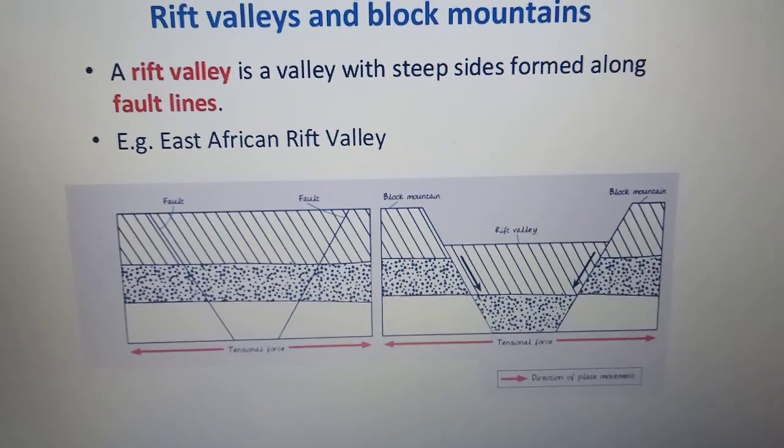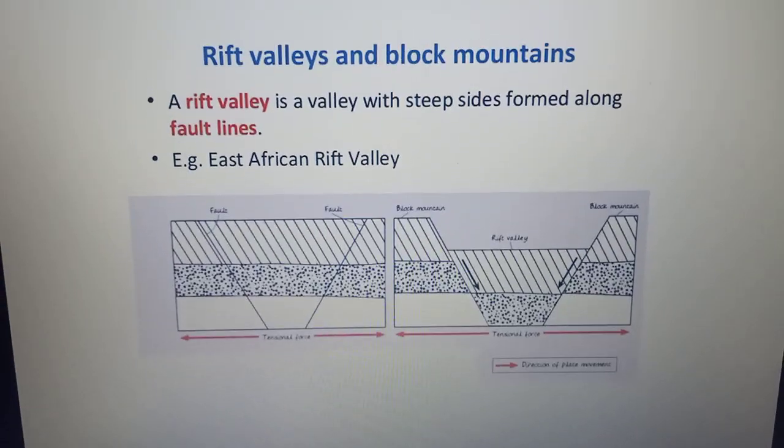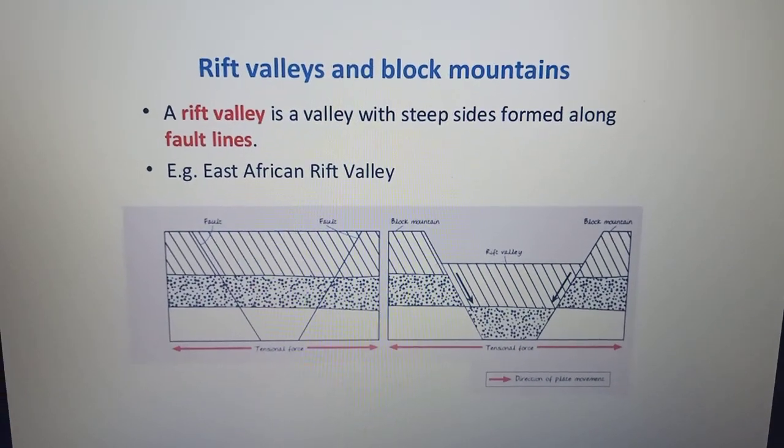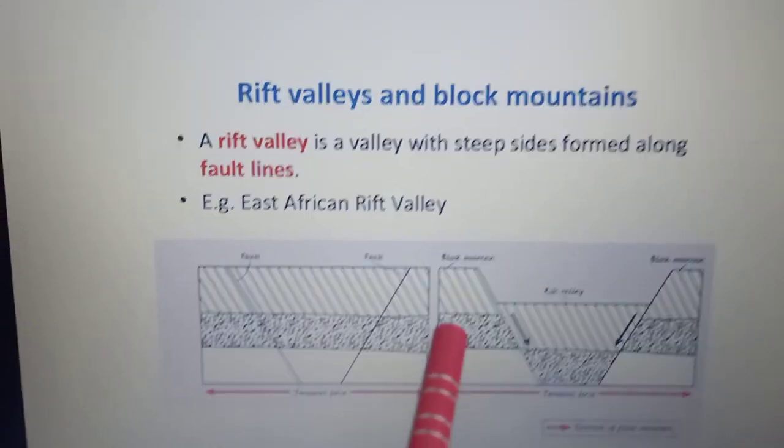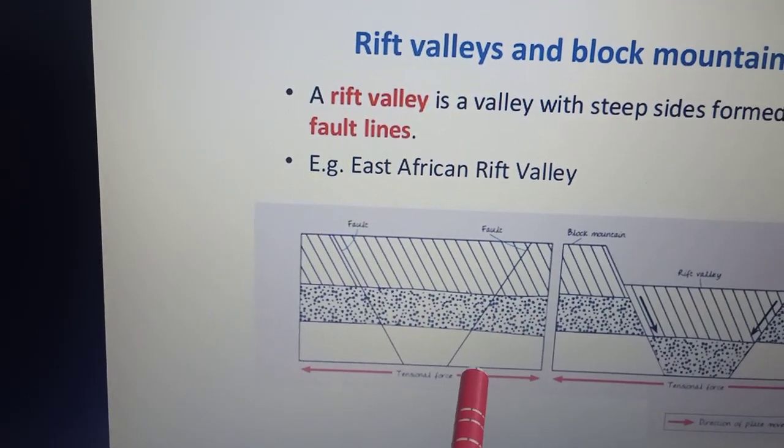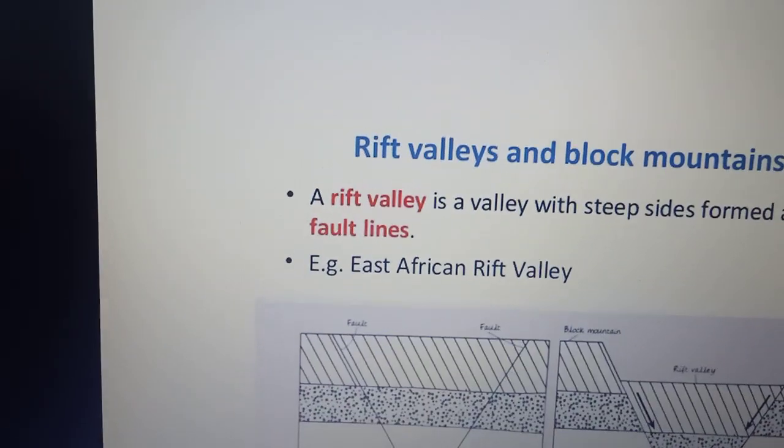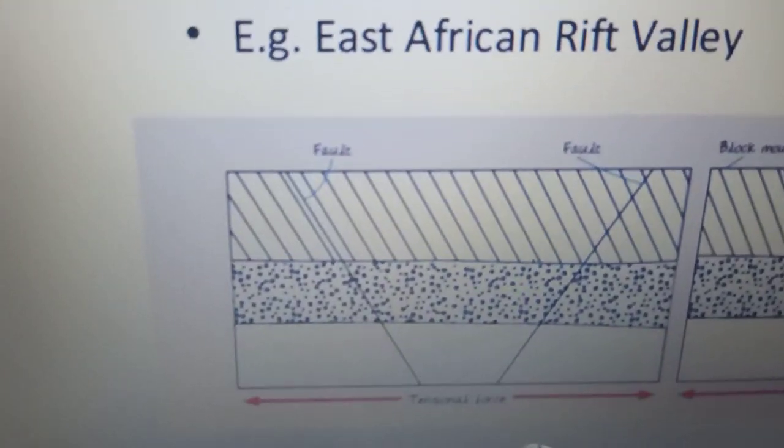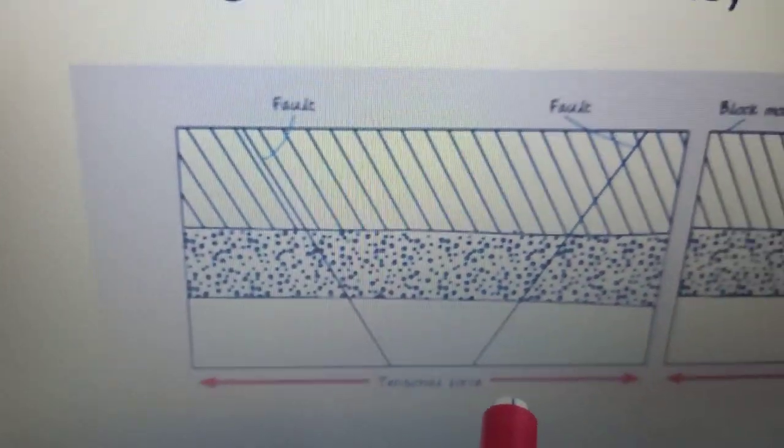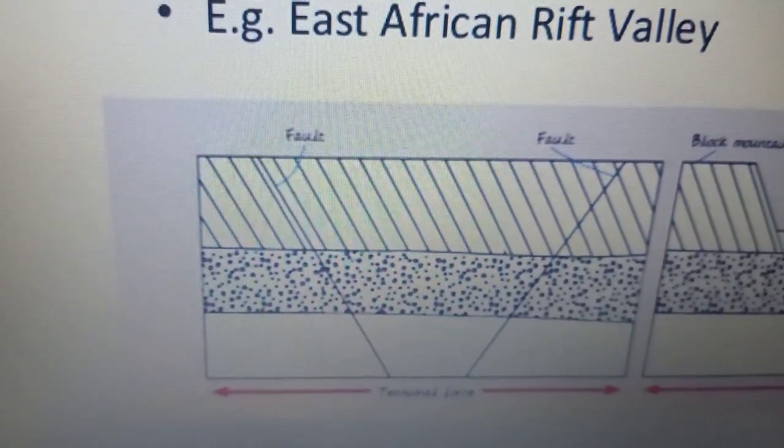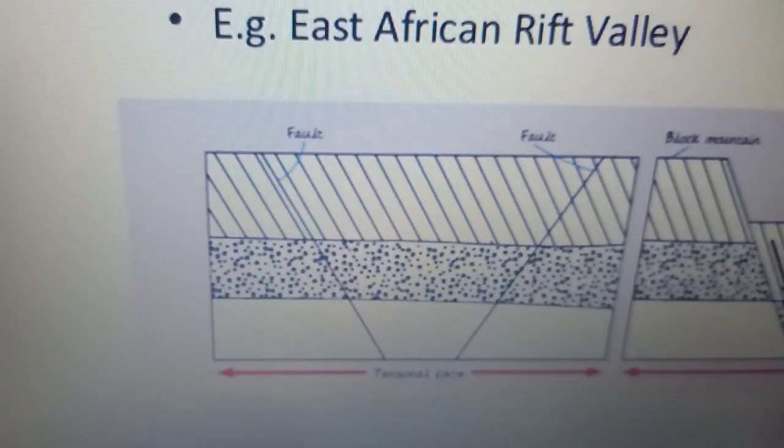So what happens is that when the rocks, as you can see in this first picture, this is the original arrangement of rocks. When the rocks are subjected to tensional force, as you can see here, there are two red arrows, meaning the forces are acting in opposite directions.